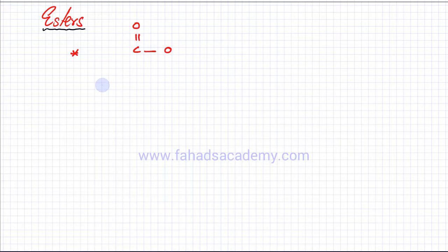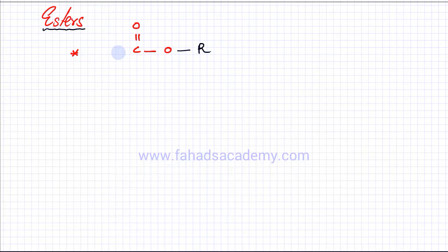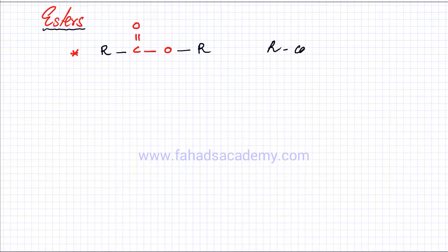The next homologous series we will study are called esters. This is a family of organic compounds with the following functional group. There's always a C double bond O — a double bond between carbon and oxygen — and the carbon is then attached via a single bond to an oxygen atom. R basically stands for a carbon chain, and there would be a carbon chain on both the right and left sides.